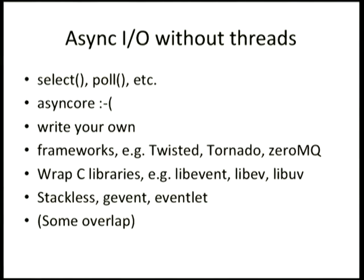How do you do asynchronous I/O without threads? There are system calls like select and poll, and a few others that only exist on certain platforms like epoll and kqueue. There are higher-level APIs on top of that in Python, like AsyncCore, which unfortunately was invented over 15 years ago and is really showing its age — it uses subclassing as an API style and isn't very extensible. So most people ignore that and write their own thing straight on top of select and poll.